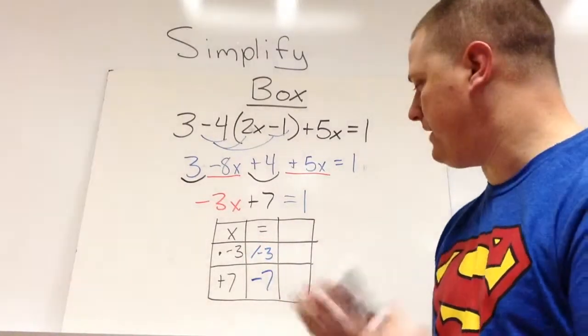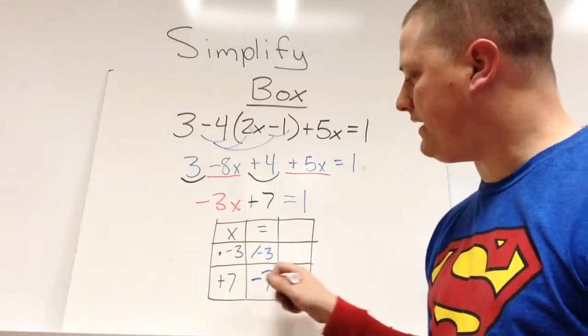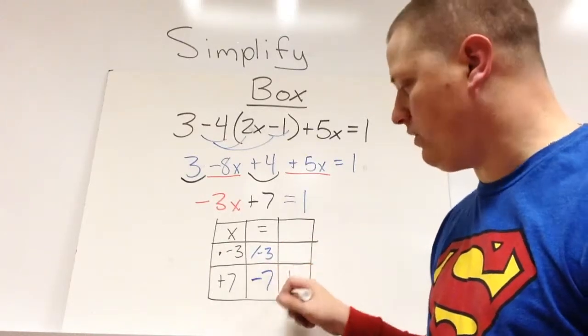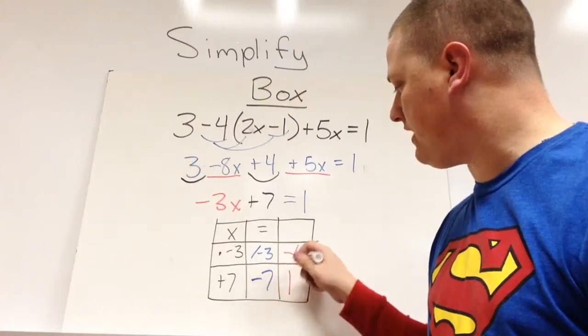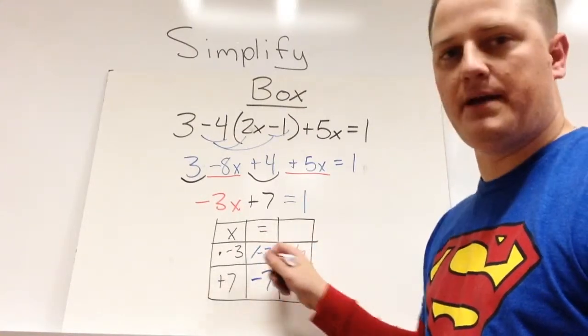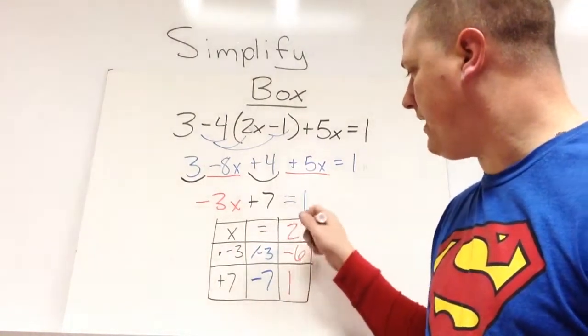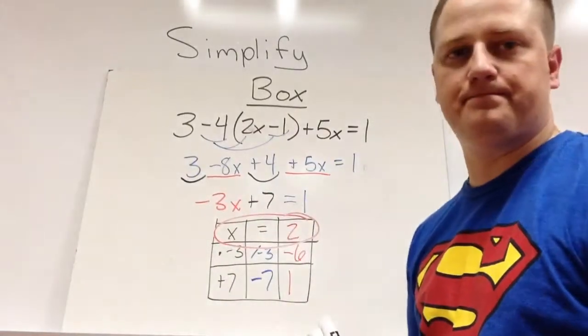So now we can find our answer by starting with 1. 1 minus 7 would be negative 6. Negative 6 divided by negative 3 would be positive 2.